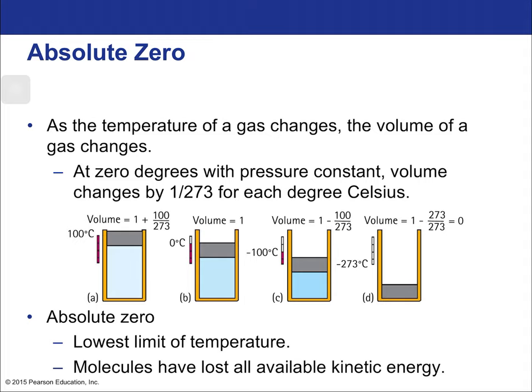As the temperature of a gas changes, the volume of the gas changes as well. At zero degrees with pressure constant, volume changes by 1/273rd of the original volume. So the remaining volume would be 1 minus 273 over 273. That means that at absolute zero, gases take up no more space. Now absolute zero does not apply to electron motion — electrons would still take up space, the atoms would still take up space — but based on this hypothetical idea, the distance between those molecules wouldn't take up space, and so the volume is approximated as zero.